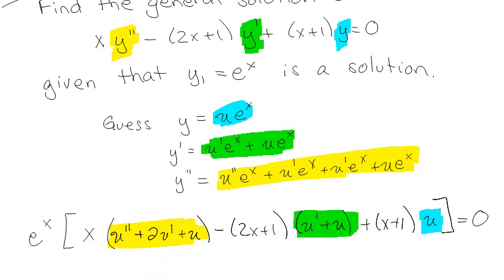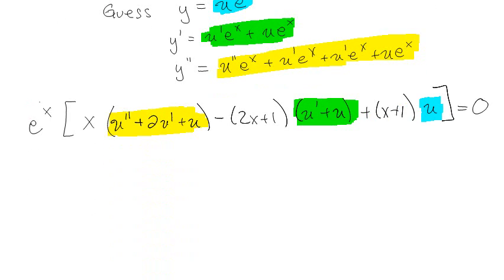And then the blue stuff which is just u, and that equals 0. I can multiply the whole thing times e^(-x) because that's never going to be 0, which basically just makes that go away.